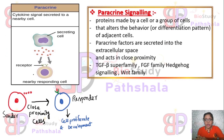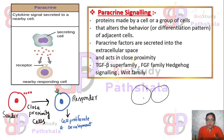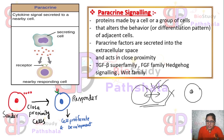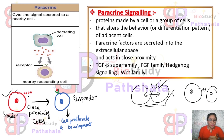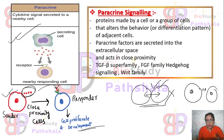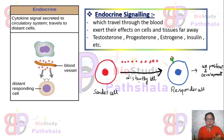Paracrine signaling means the cells are not physically connected. There is a minimum but close distance between the two cells. One cell produces signals and the other receives them and shows responses, as seen in this diagram. This kind of signaling is observed in the TGF-beta superfamily, FGF family, Hedgehog family, and Wnt family.